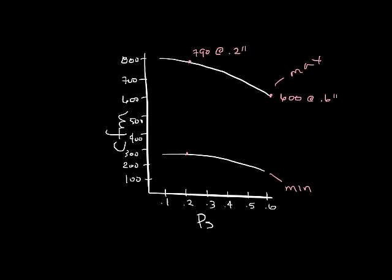Same thing for the minimum line. Down here at 0.2 you have about 250 CFM and at 0.6 inches you have about 175.